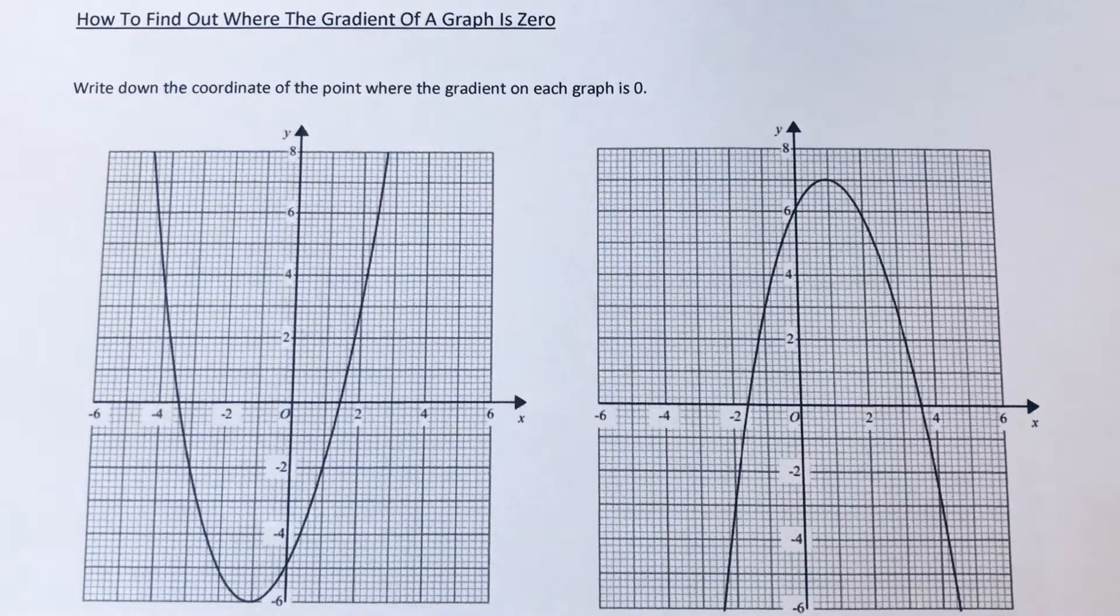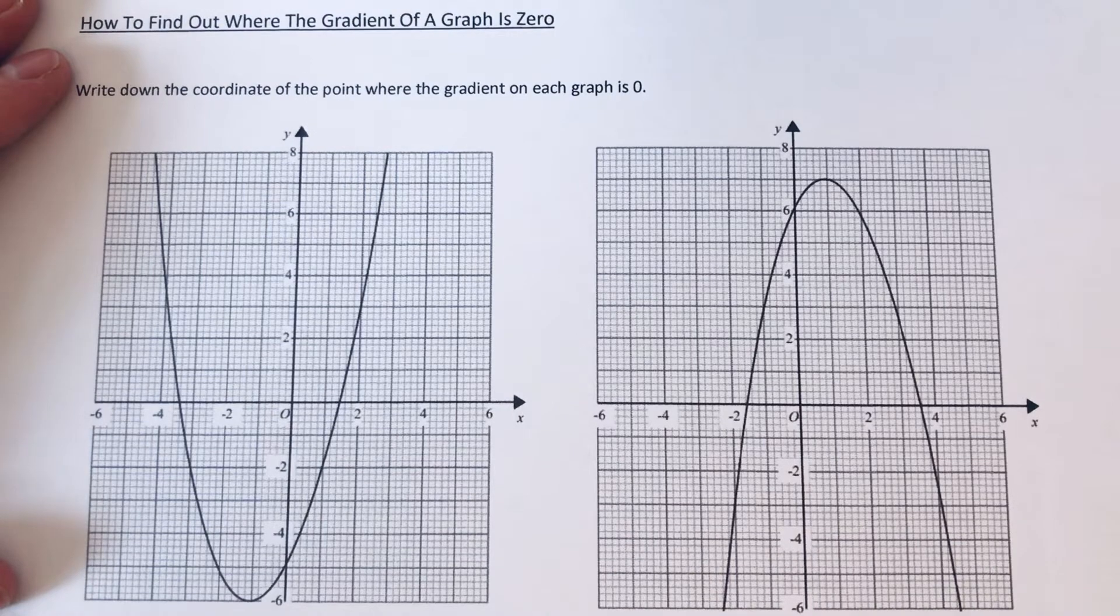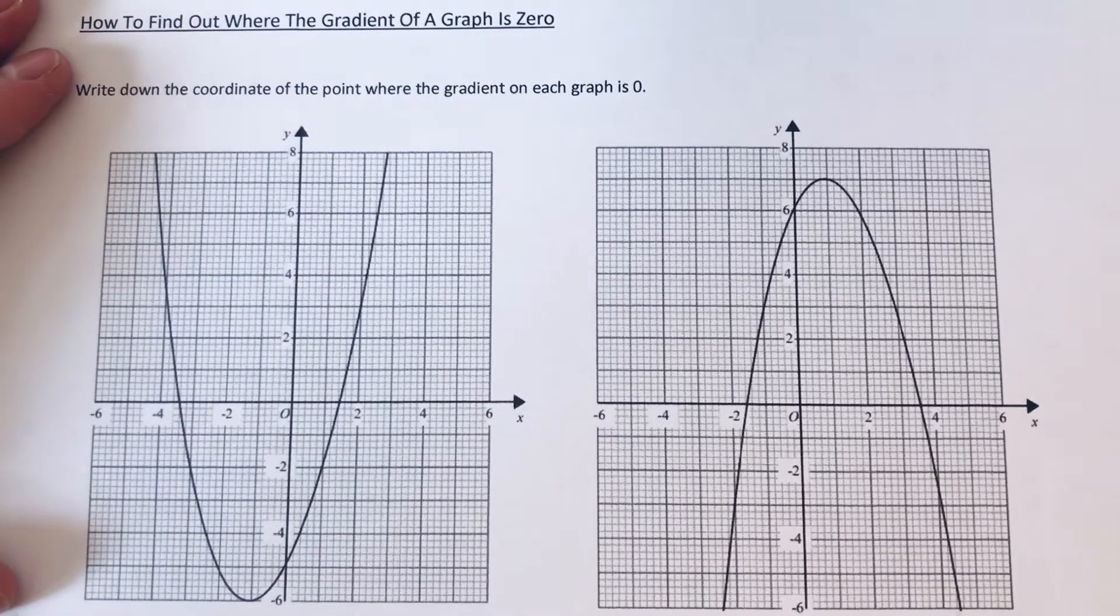So it is flat. Okay, so let's have a look at the two examples here then. I've got write down the coordinate of the point where the gradient of each graph is 0.